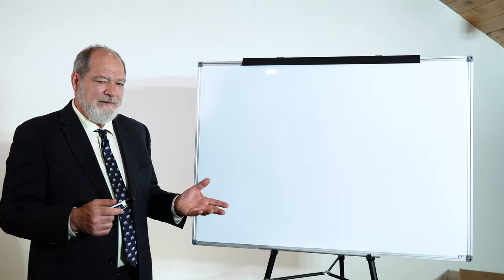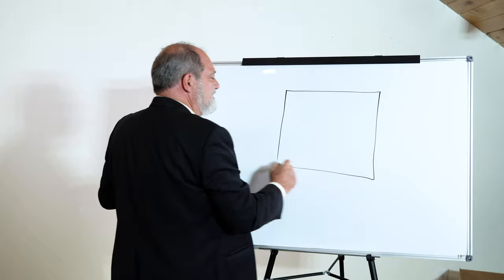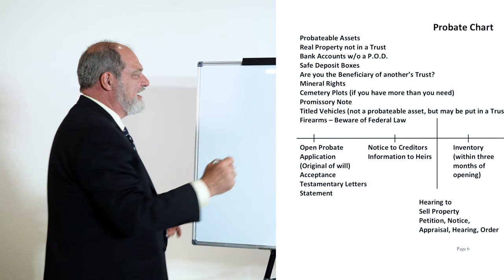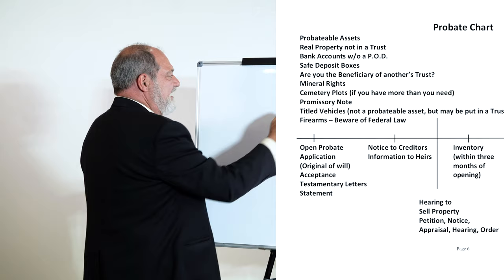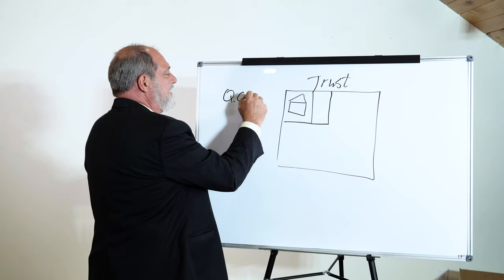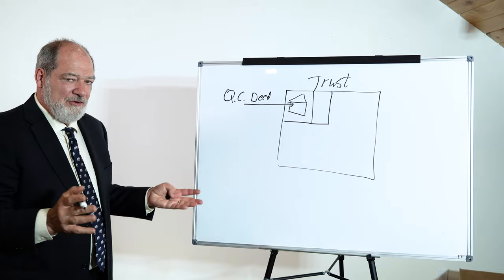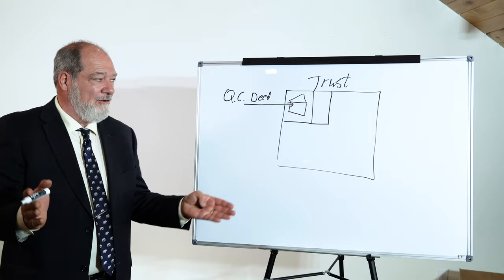Here's our trust. The number one probatable asset, as you can see on that chart, is real property: a house and land. You might have another piece of property too. What we use is a quit claim deed to move the property into the trust. Now it's no longer officially in your name, it's officially in the name of the trust, and we've avoided probate for that issue.